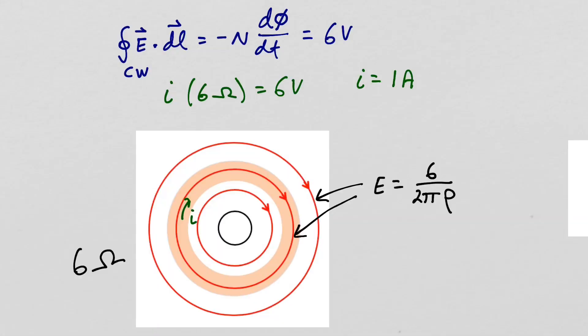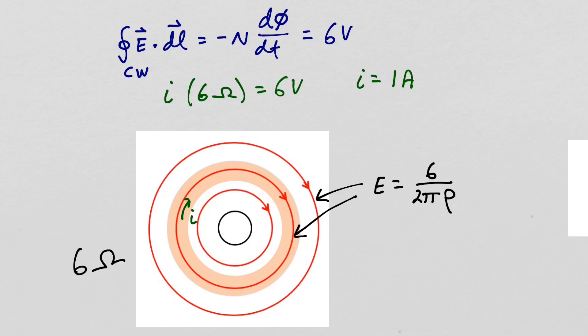In example two, we placed a conducting material with a total resistance of six ohms in the form of a ring around the solenoid. With the solenoid producing an electromotive force of six volts, the result was one amp of current flowing around the conducting ring.